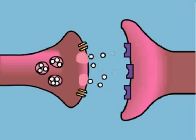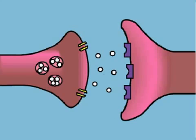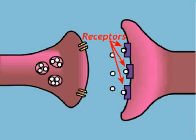The molecules released from the vesicles are chemicals called neurotransmitters. They drift across the synaptic space and bind to special proteins called receptors on the postsynaptic neuron.